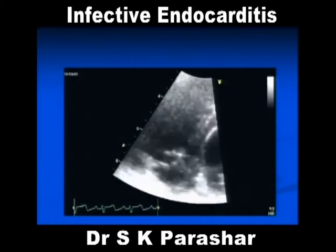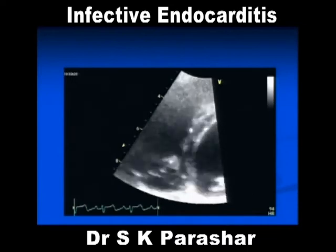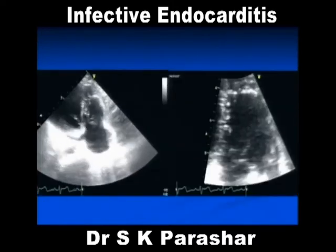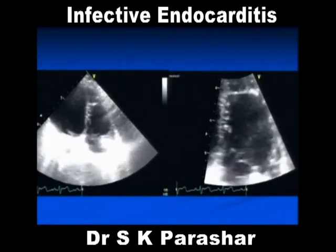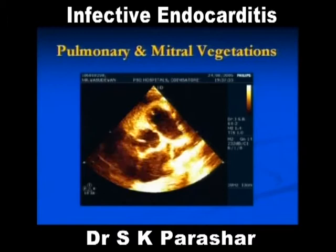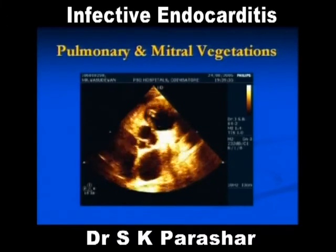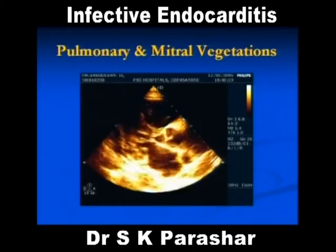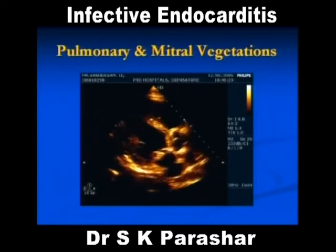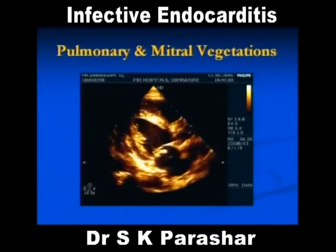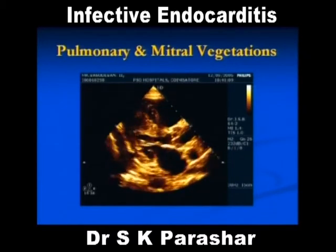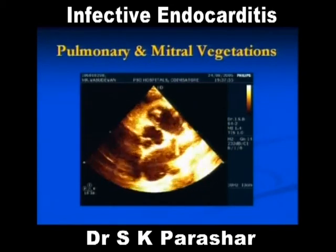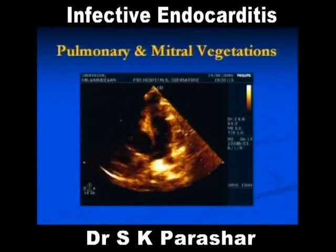Going into the RA in systole and into the RV during diastole — same pattern. You have seen vegetation in all valves. Here you see a pulmonary valve with micro vegetations, irregular motion again from the upstream side. And again you see an aortic vegetation here — any irregular mass.